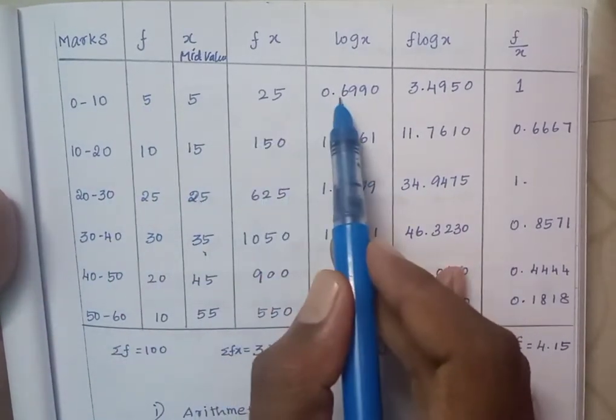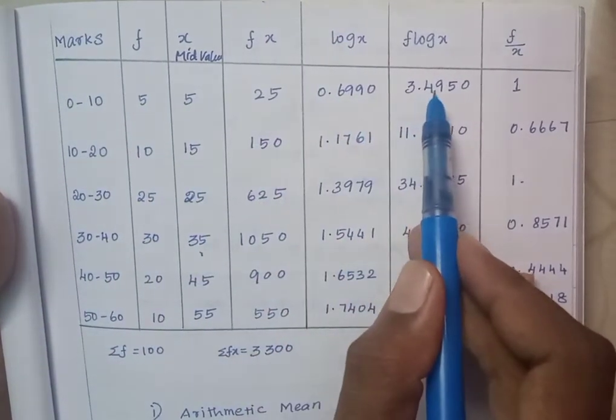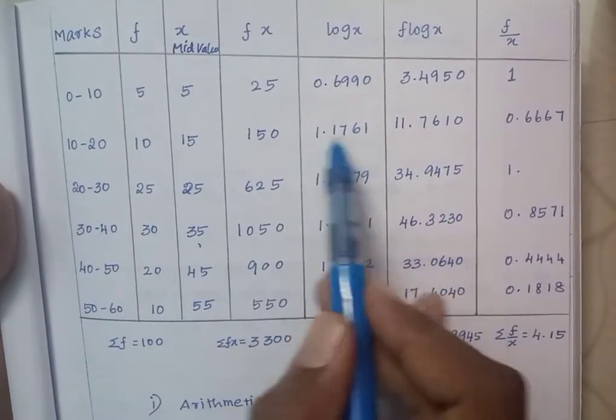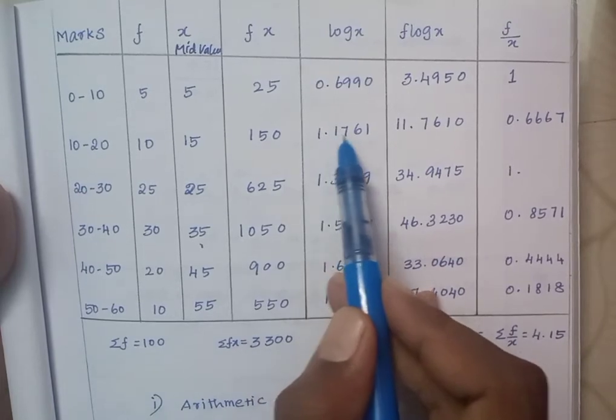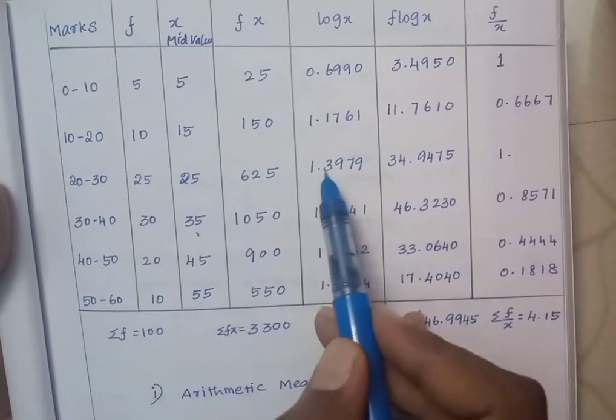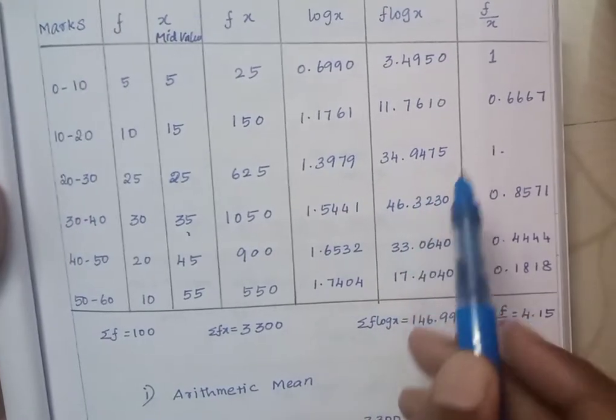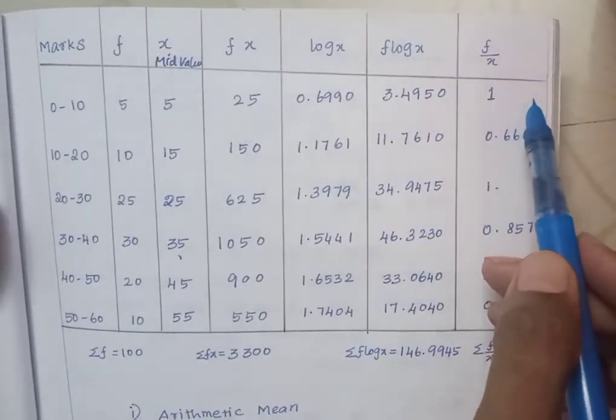F times log x means the log x value multiplied with f. 5 into 0.6990 equals 3.4950. Using a calculator, 10 into 1.1761 equals 11.7610. 25 times 1.3979 equals 34.9431.